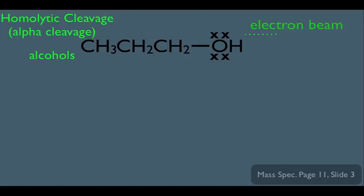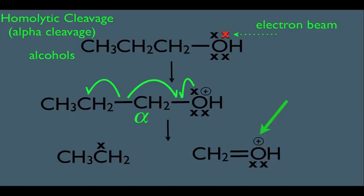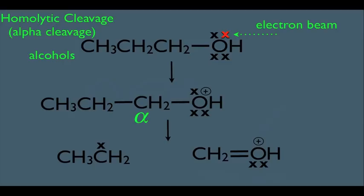We stick them in the mass spec. The electron beam dislodges this electron right here. We end up with this molecular ion right here. Let's focus on this particular alpha carbon. Notice it is the carbon that's directly bonded to the oxygen, just like with ethers. And notice the arrow movement is identical to what we've been seeing before. It's the bond to the left of the alpha carbon that's being cleaved, and the bond to the right that's becoming a double bond, which ends up with these two structures. The fragment with the carbon doubly bonded to the oxygen is the one that's charged and is therefore the one detected by the mass spec.